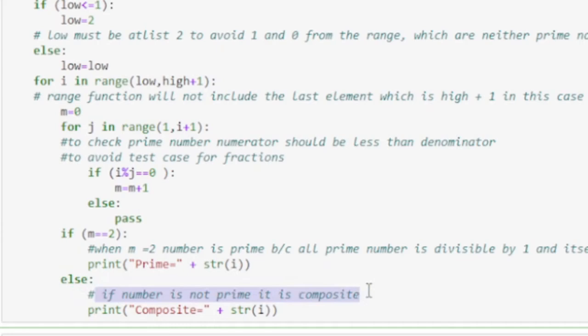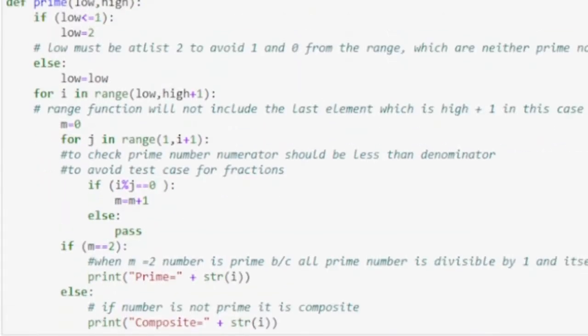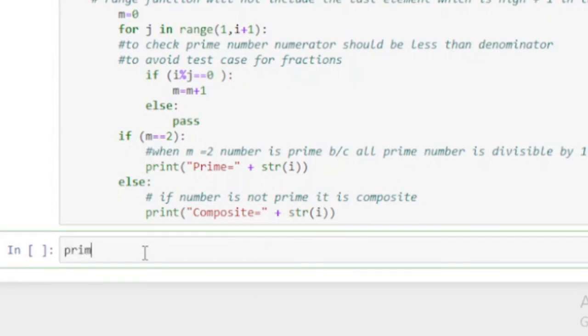Else, if the number is not prime it is composite, because we have avoided 0 and 1 at the beginning by setting a condition, which are neither prime nor composite.